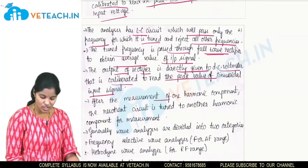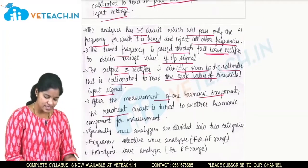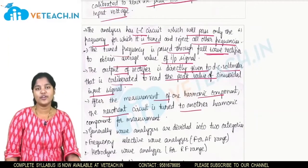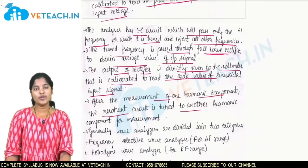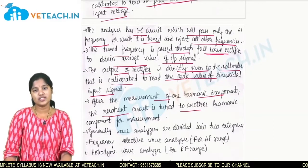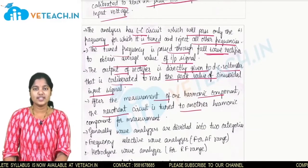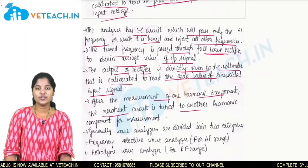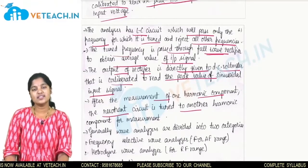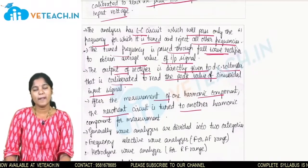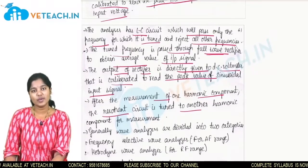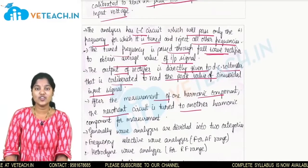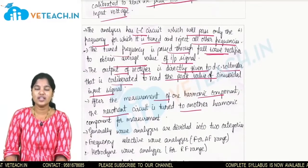After measurement of one harmonic component, the resonance circuit is tuned to another frequency. First, one harmonic frequency is tuned, the signal is read and its peak value is noted. Then it is tuned to another frequency, the signal is input again, and another frequency peak value is noted. In this way we can measure each and every frequency.